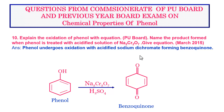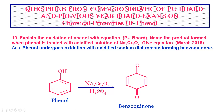Next question: explain the oxidation of phenol with equation. Alternatively: name the product formed when phenol is treated with acidified sodium dichromate. This question is from the March 2015 board examination. Phenol undergoes oxidation on treatment with acidified sodium dichromate (Na2Cr2O7), forming a diketone namely benzoquinone. The equation: C6H5OH + acidified Na2Cr2O7 gives benzoquinone, which is a diketone.